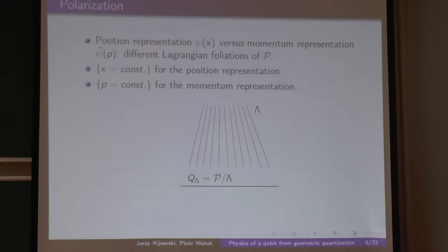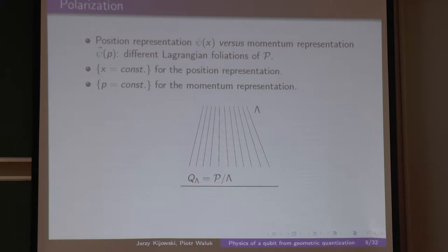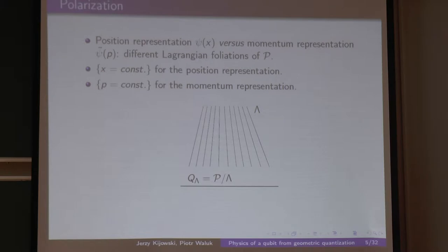The geometric picture is: here is the big phase space and we choose a Lagrangian foliation. Lagrangian means that each leaf has dimension one-half the dimension of P, and the symplectic form vanishes when restricted to vectors tangent to the leaf. This is the case here because the symplectic form contains dp dx, so any vector tangent to such a leaf contains only d/dx, and omega vanishes on it.